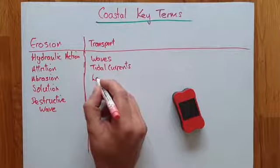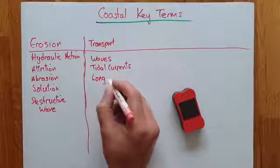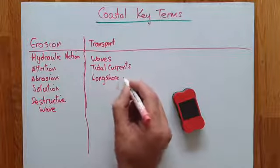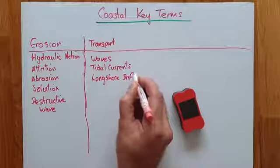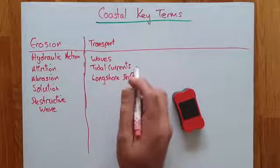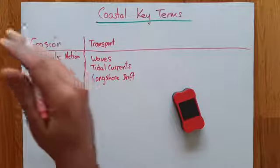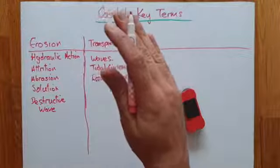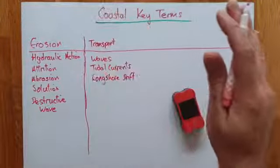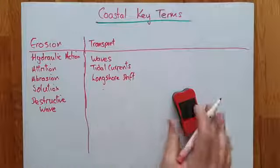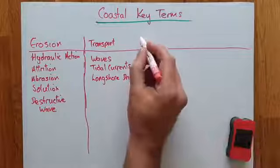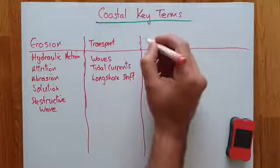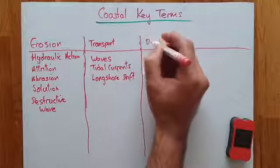Associated with transportation is something called longshore drift. Longshore drift is literally sand and gravel that moves and drifts along the beach — it's a process that takes place along the coastline.